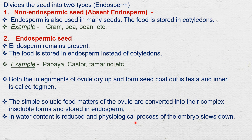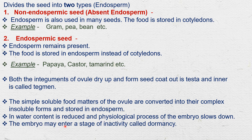The water content is reduced — this is called dehydration — and the physiological processes of the embryo slow down. This means only 5–6% water is present. The embryo may then enter a stage of inactivity called dormancy.